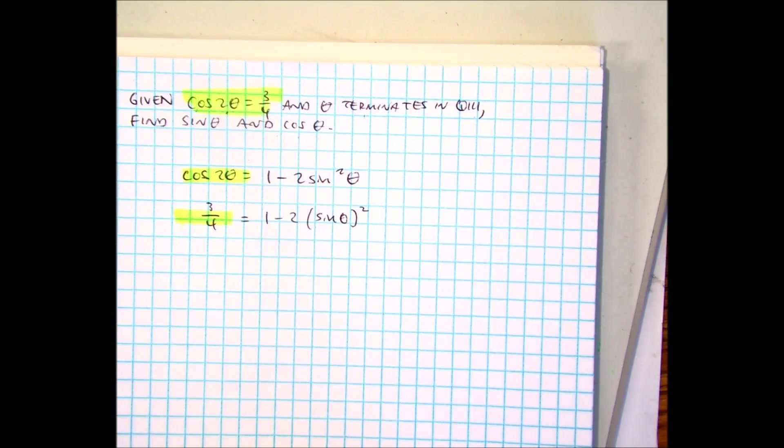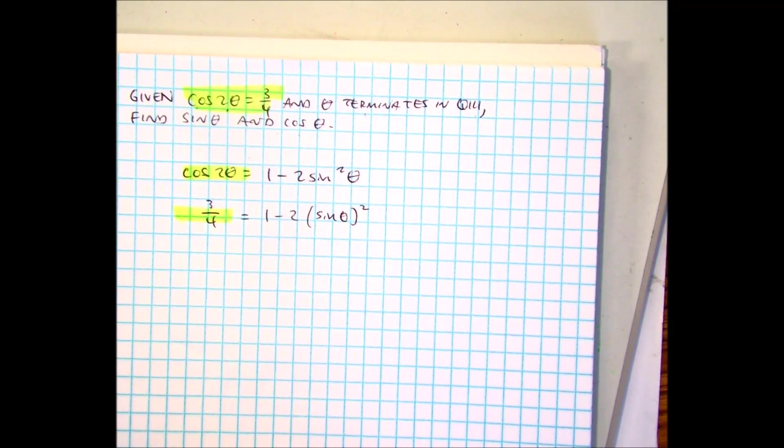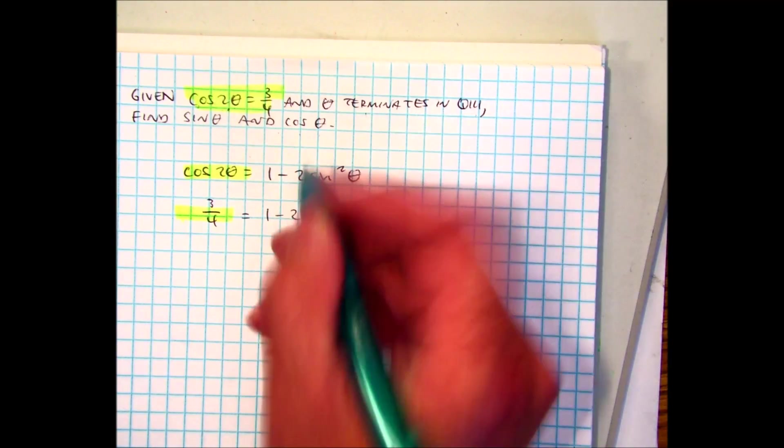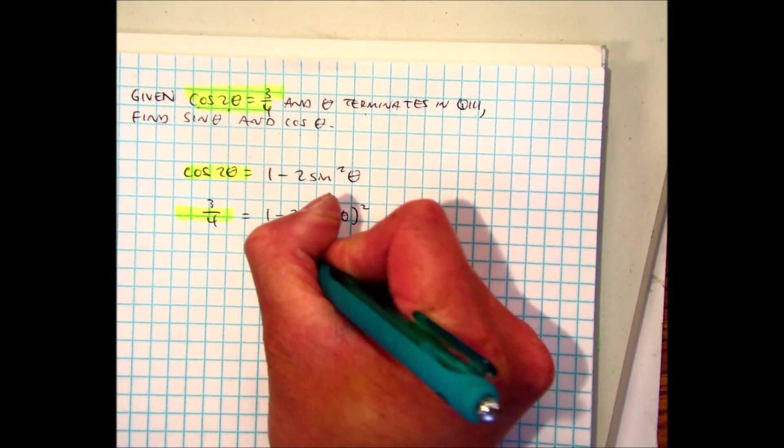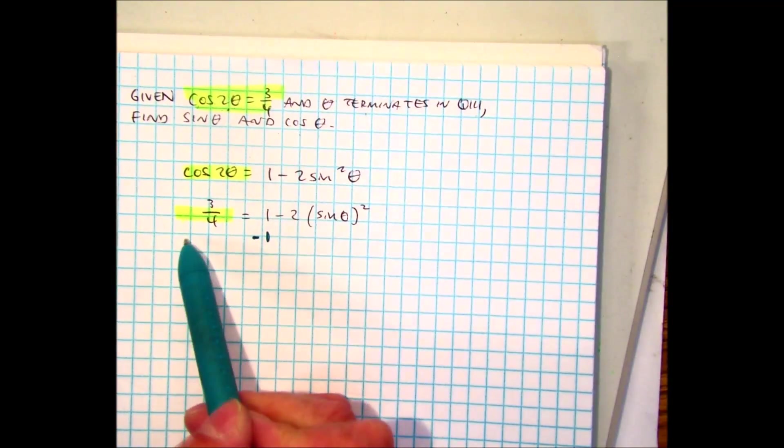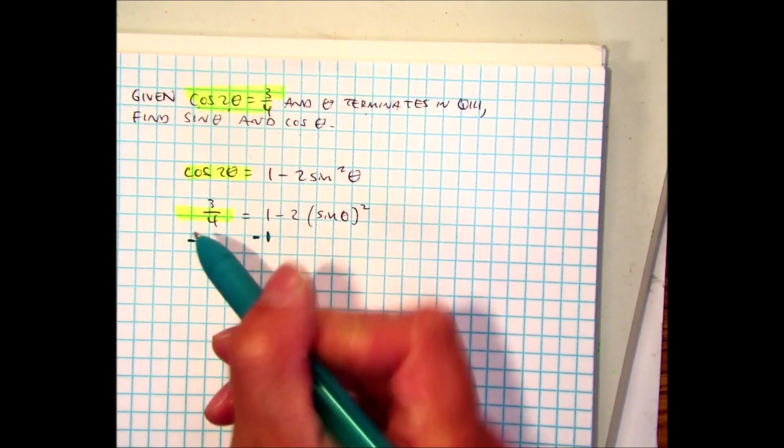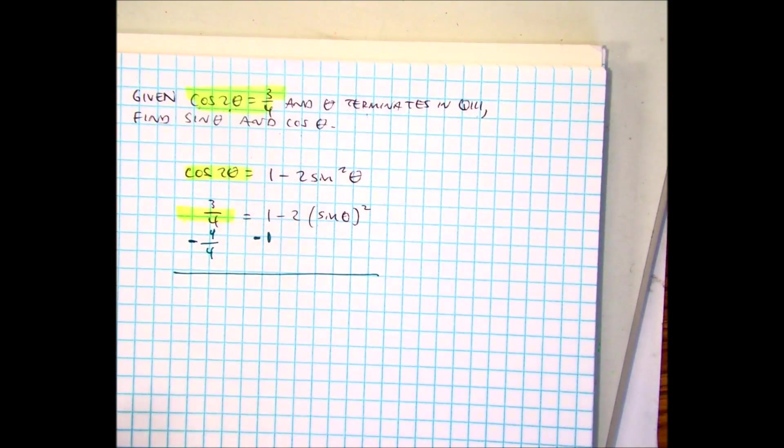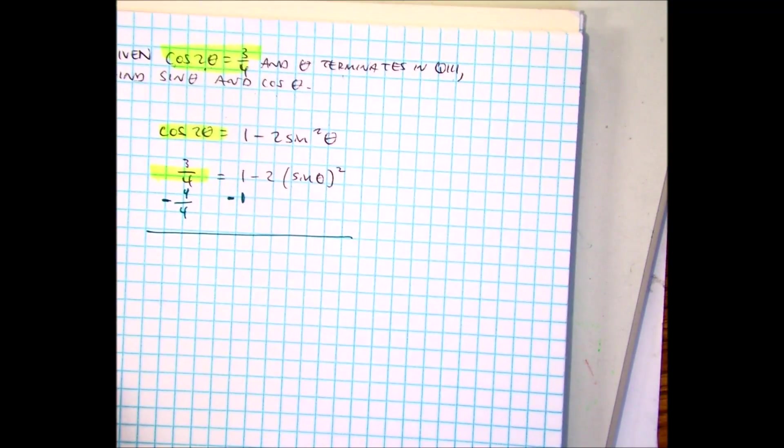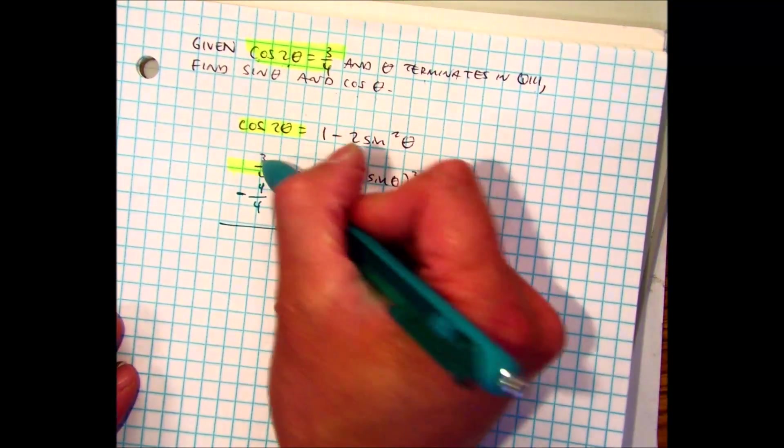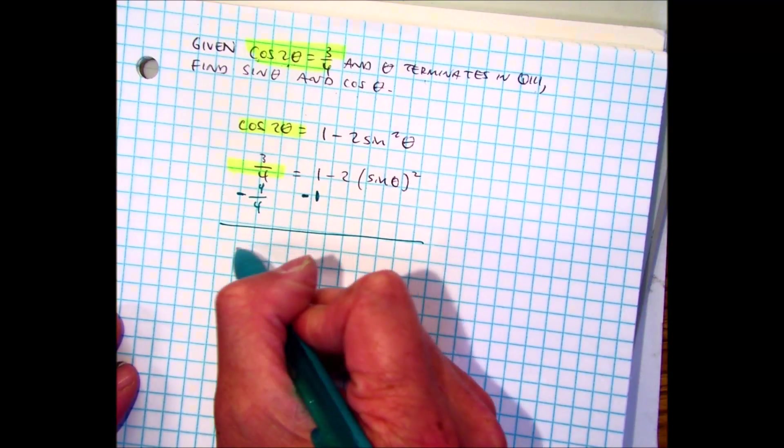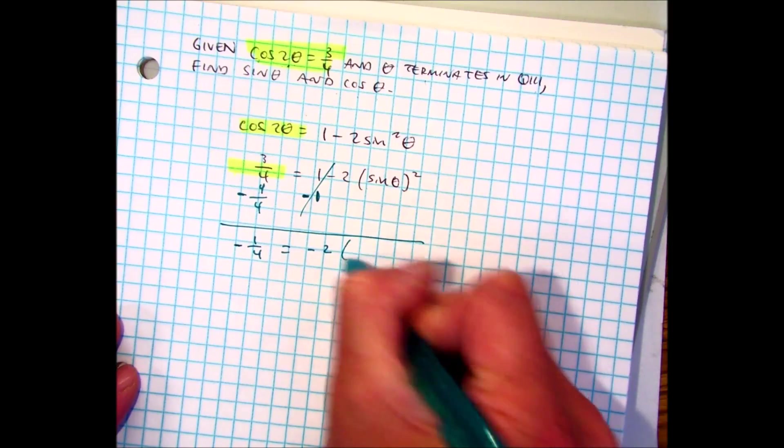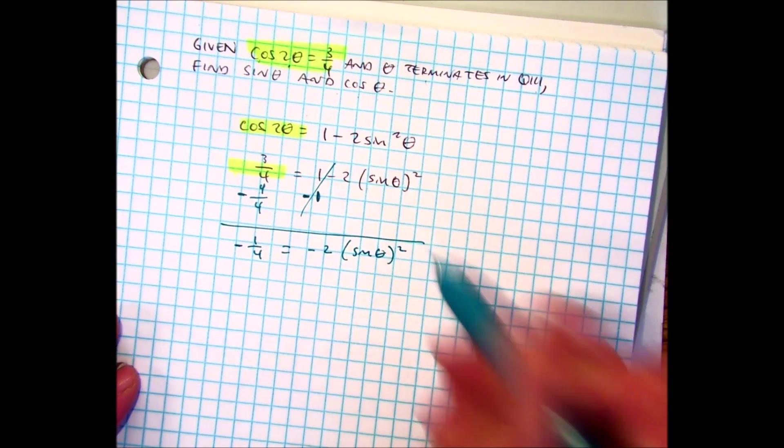The question is, what should I do first? Divide it by negative 2, subtract 1, or take the square root? Subtract 1. What do you think I'm going to subtract over here? 4 over 4. 3 minus 4 is negative 1 over 4. Negative 1 over 4 equals negative 2 sine theta squared.